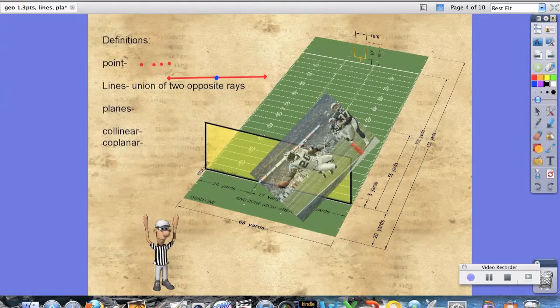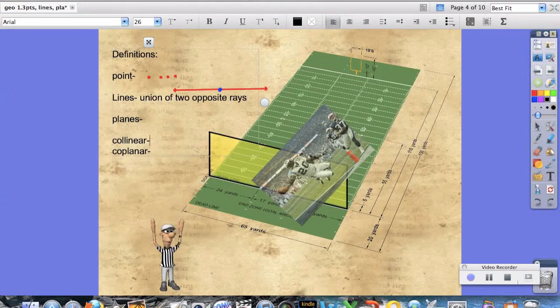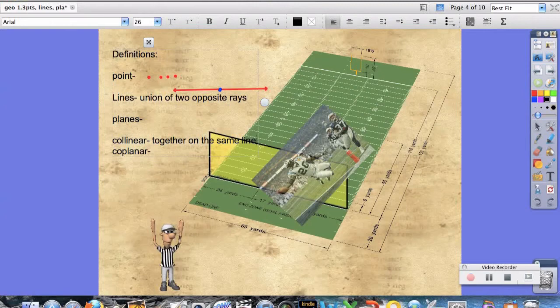Now collinear and coplanar, we group together because they are fairly similar. They both have the prefix co, which you guys have all heard before because of cooperate. And cooperate means to work together. Collinear is line, or linear means line. So on the same line, or together on the same line. Coplanar obviously means together on the same plane.